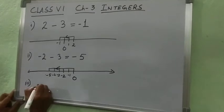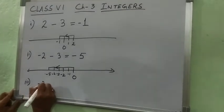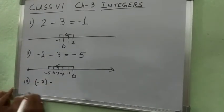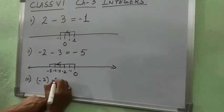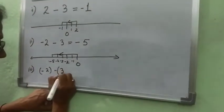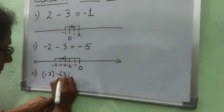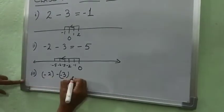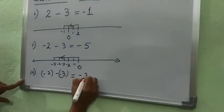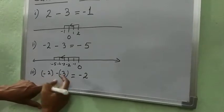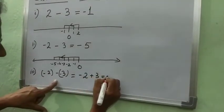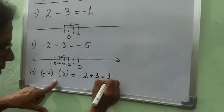You can write it like this: minus 2 minus minus 3, which equals minus 2. Minus minus becomes plus 3. So the answer will come plus 1.